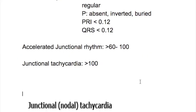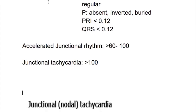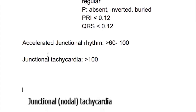There are three types of junctional rhythm: a regular junctional rhythm, an accelerated junctional rhythm, and a junctional tachycardia.